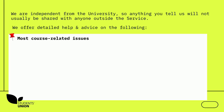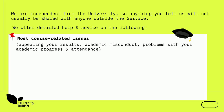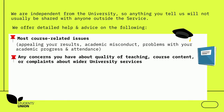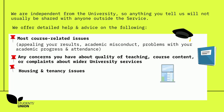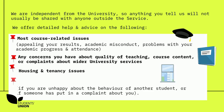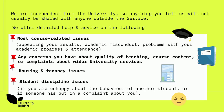We offer detailed help and advice on the following: most course-related issues such as appealing your results, academic misconduct, problems with your academic progress and attendance. Any concerns you have about quality of teaching, course content, or complaints about wider university services. Housing and tenancy issues. Student discipline issues, such as if you are unhappy about the behaviour of another student, or if someone has put in a complaint about you.